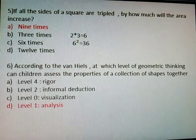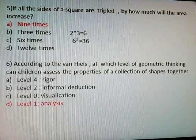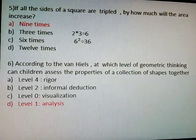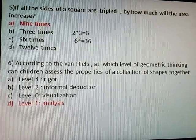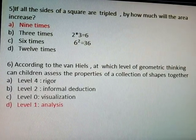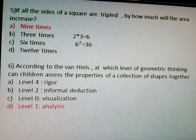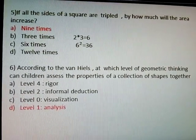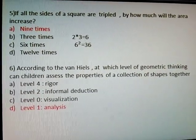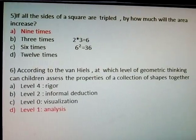Sixth question: According to the Van Hiele theory, at which level of geometric thinking can children assess the properties of a collection of shapes together? Answer: Level 1.